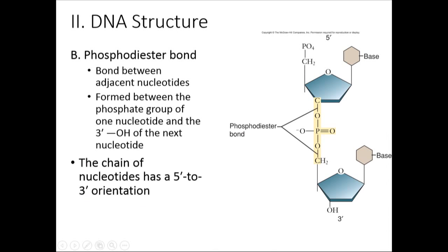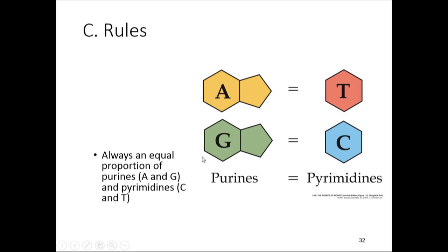Between two nucleotides you have what's called a phosphodiester bond — a phosphate molecule between two esters — and that binds the three-prime carbon of one nucleotide to the five-prime carbon of the next. So five-prime and three-prime is basically another way of saying the top or the bottom.